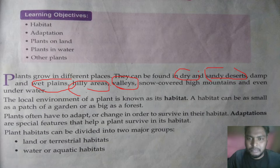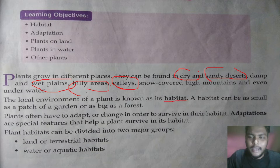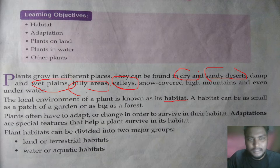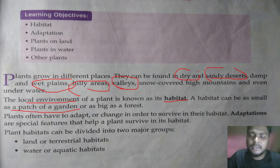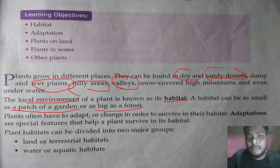The question remains: what is a habitat? Anything that surrounds a plant is known as the habitat of that plant. The local environment of a plant is known as its habitat. The habitat can be as small as a patch of garden or as big as a large forest.